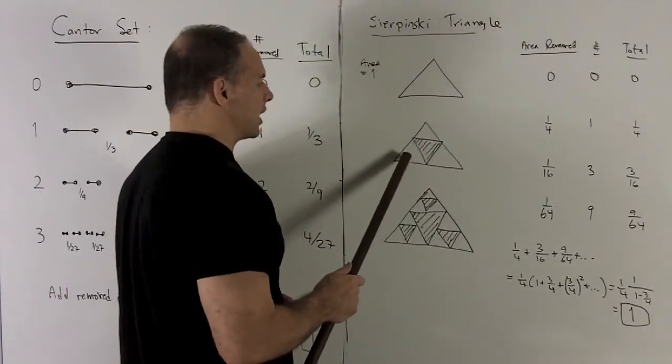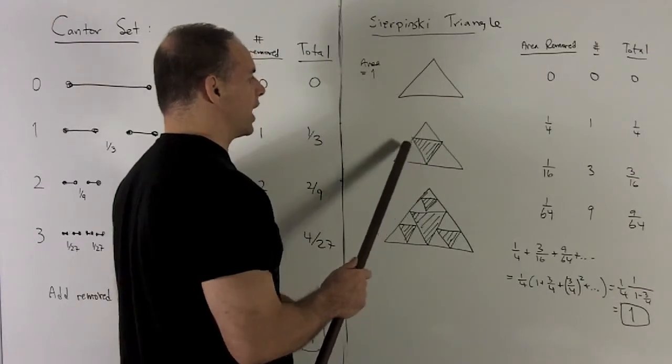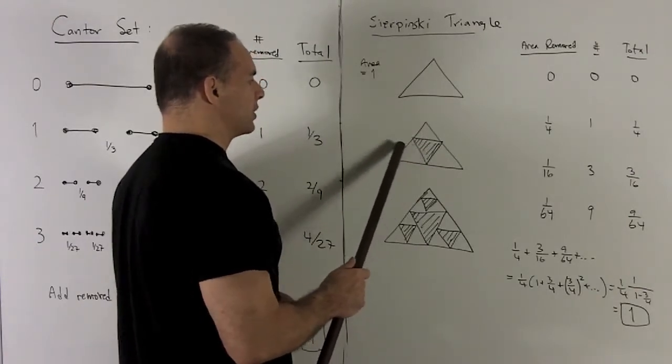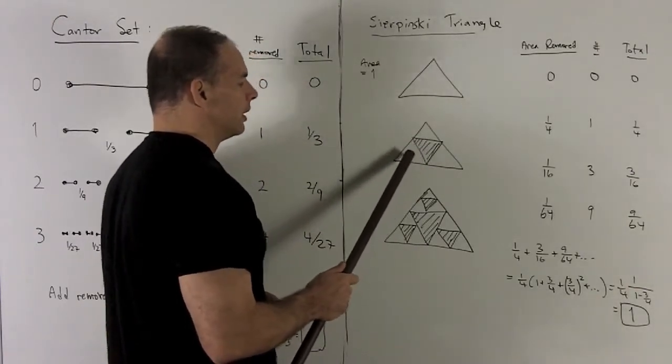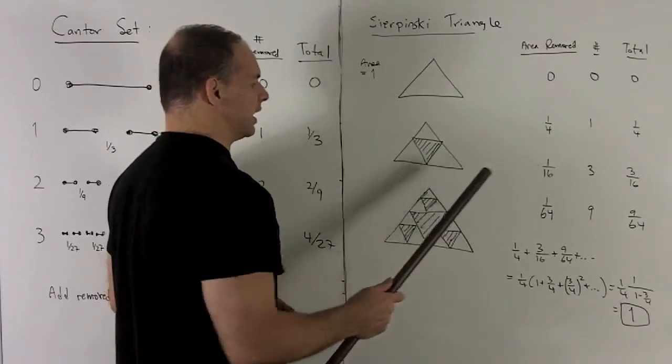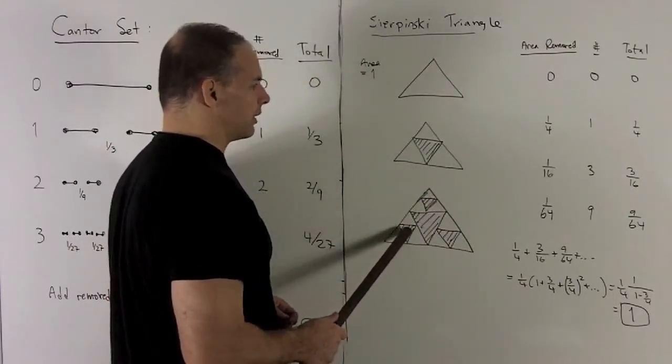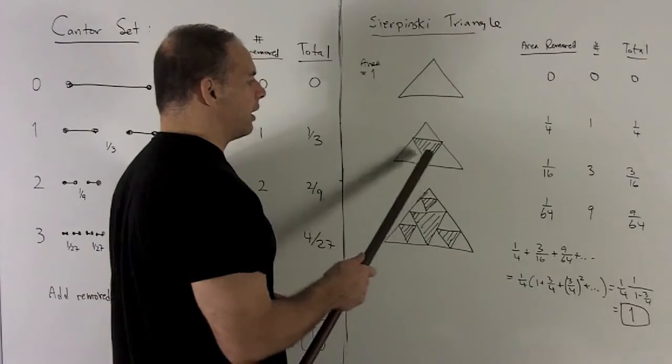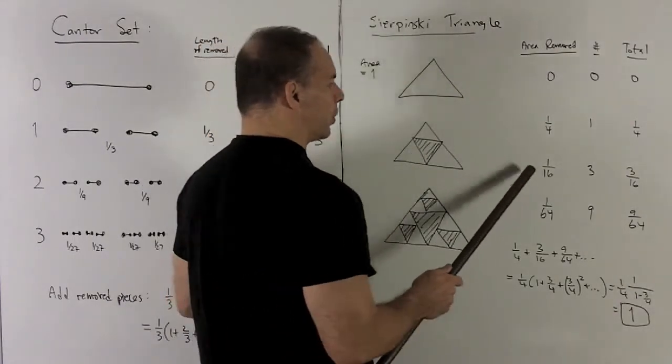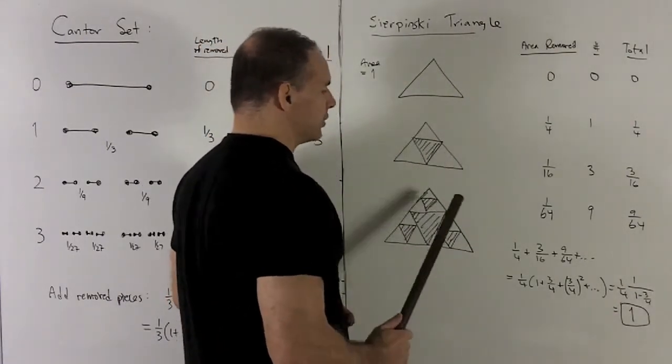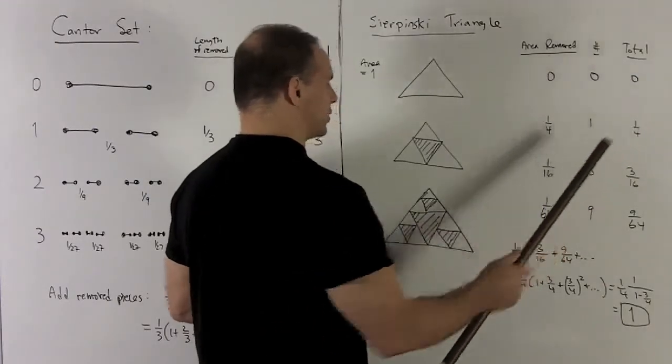I repeat the process. I go to this triangle here, take out its middle equilateral triangle. So area I just removed is one sixteenth, right there, and we're going to pull that out of three triangles. So the total area removed at this stage is going to be three sixteenths.